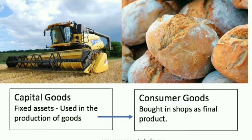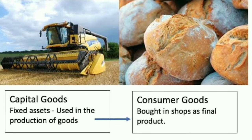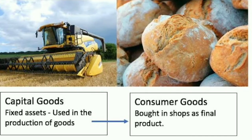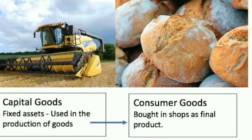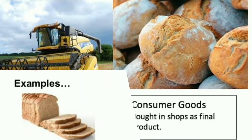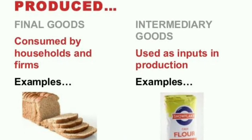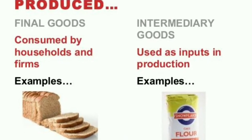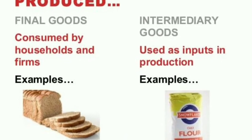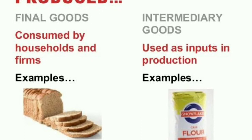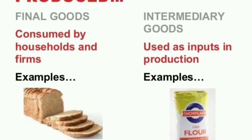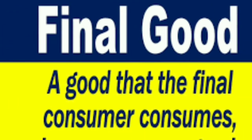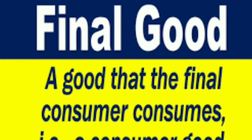Capital goods and consumer goods differ: consumer goods are bought in shops as final products, but fixed capital assets are used in production. Final goods are consumed by households and firms, but intermediary goods are used as input. Flour and bread is a suitable example — flour is an input and bread is the final consumer good.